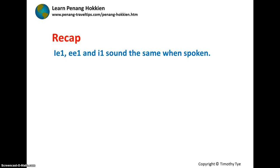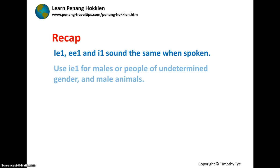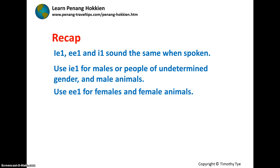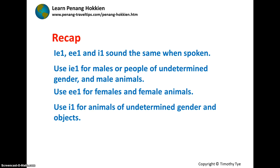And to recap: i, i, and i sound the same when spoken. Use the masculine form for males or people of undetermined gender and for male animals. Use the feminine form for females and female animals. Use the neutral form for animals of undetermined gender and for objects.